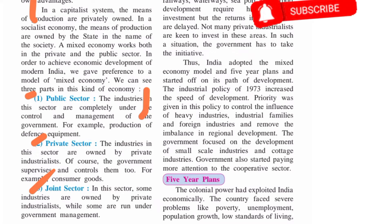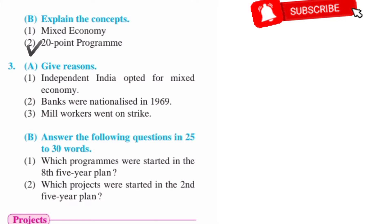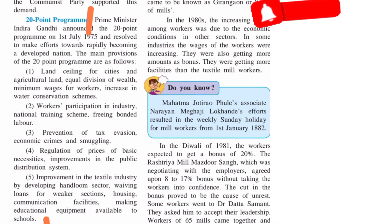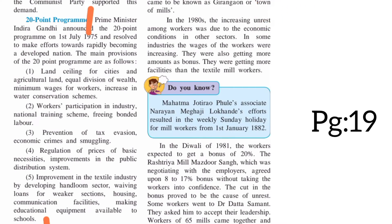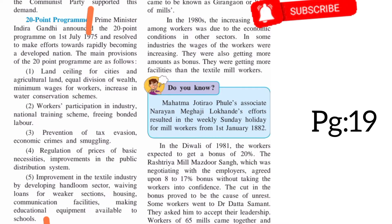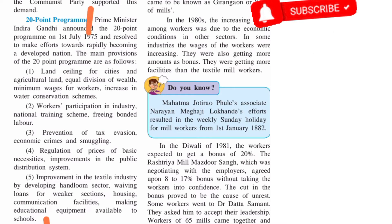You have to write including three points: government management and the others. For the second part, the 20-point program — the answer is on page number 19. You have to write from 'Prime Minister' up to 'schools,' meaning you have to write the full paragraph covering all 20 points of the program.